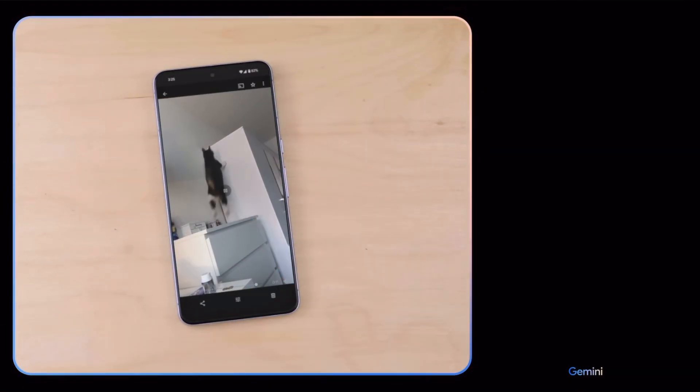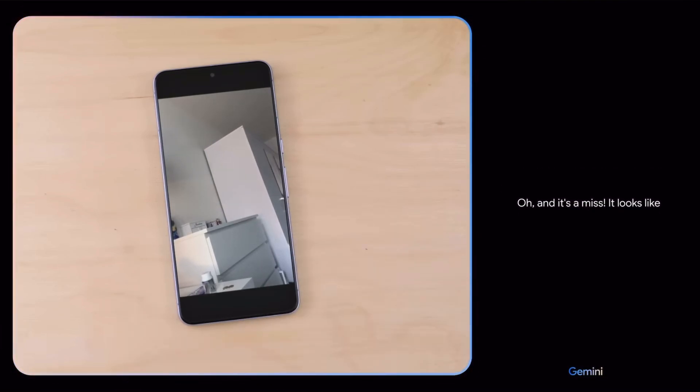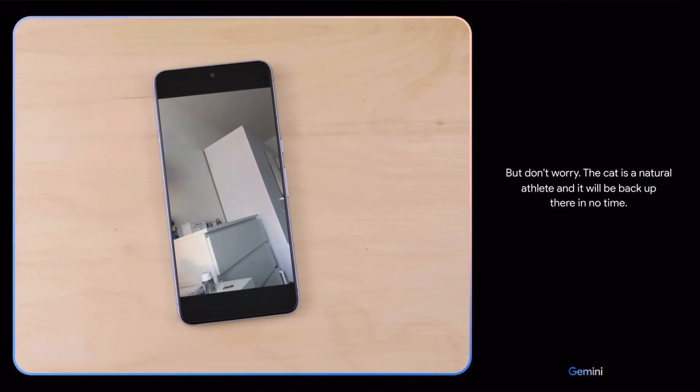What do you think might happen next? The cat is going to jump to the wall and stick the landing. It's going to be a perfect 10. Oh, and it's a miss. It looks like it was just a little too far away. But don't worry. The cat is a natural athlete and it will be back up there in no time.